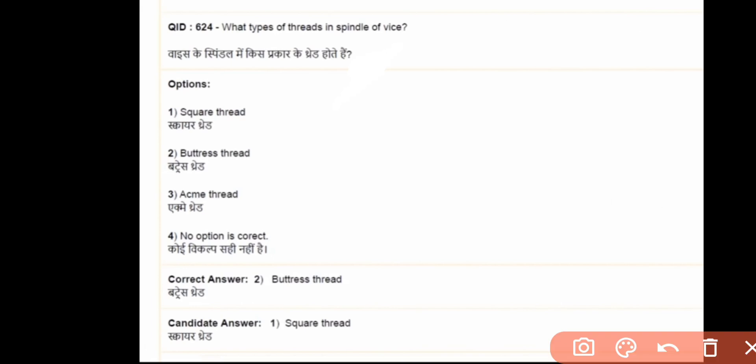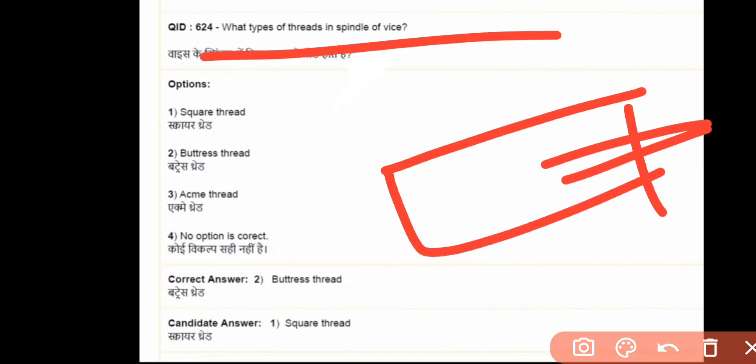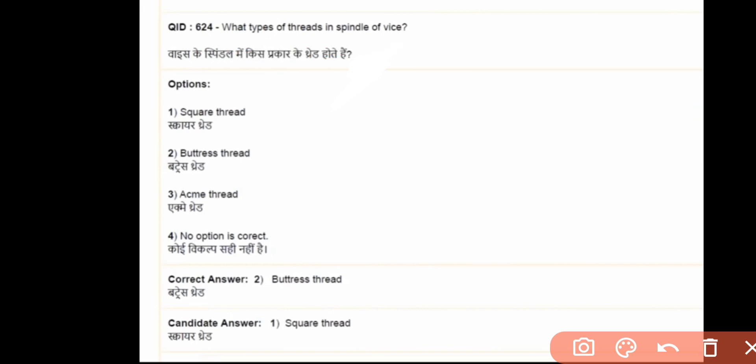The next question is what type of threads is spindle of vice? Square thread, buttress thread, acme thread. The answer is buttress thread.